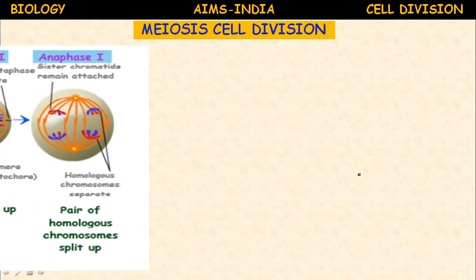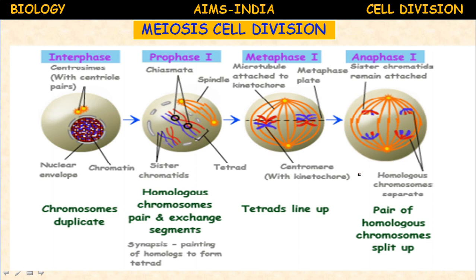Meiosis involves two sequential cycles of nuclear and cell division, called Meiosis I and Meiosis II. Only a single cycle of DNA replication occurs in interphase — it occurs only one time. It involves the pairing of homologous chromosomes and recombination between them, providing opportunities for new combinations of genes in the gametes. The law of independent assortment and crossing over both take place in meiosis. Chromosomal and gene mutations can also occur due to irregularities of meiotic divisions.